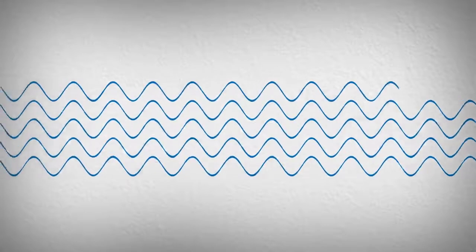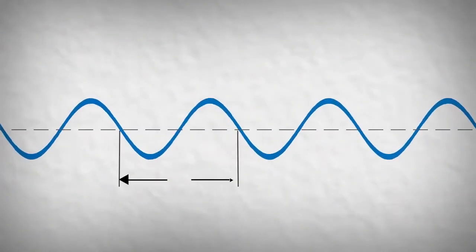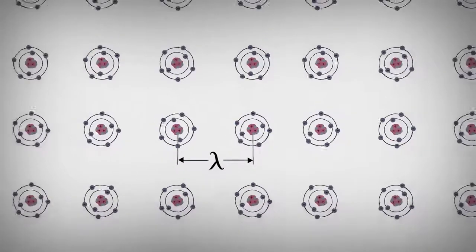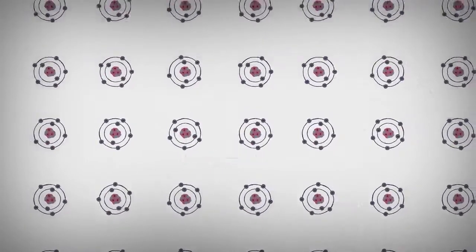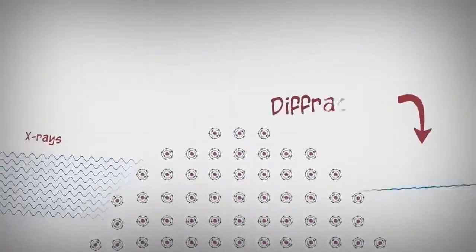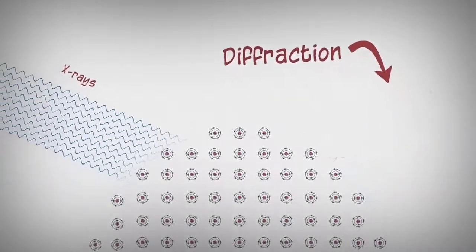X-rays are high-energy light with a repeating period called the wavelength. Since the wavelength of an X-ray is similar to the distance between atoms in a crystal, a special interference effect called diffraction can be used to measure the distance between the atoms.